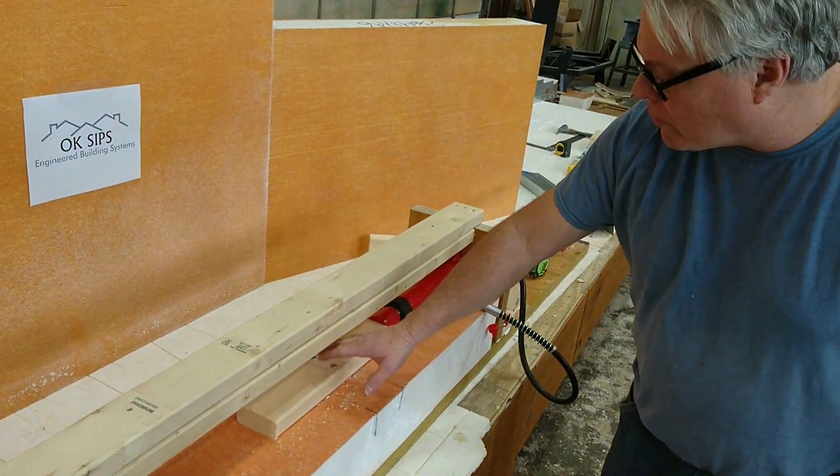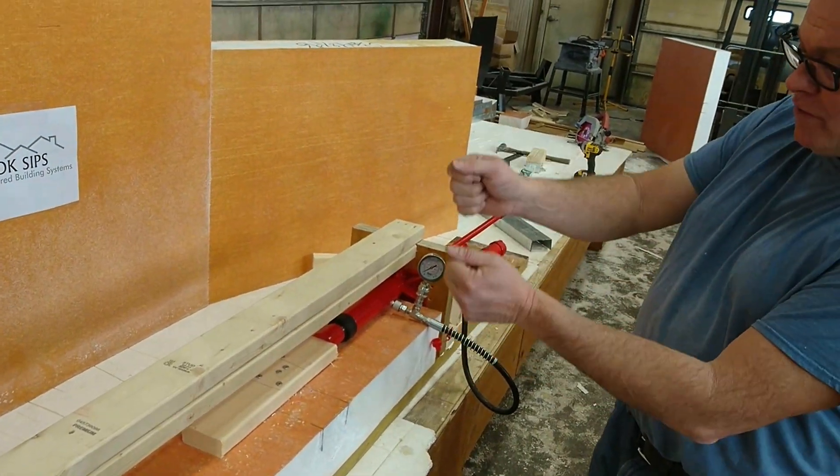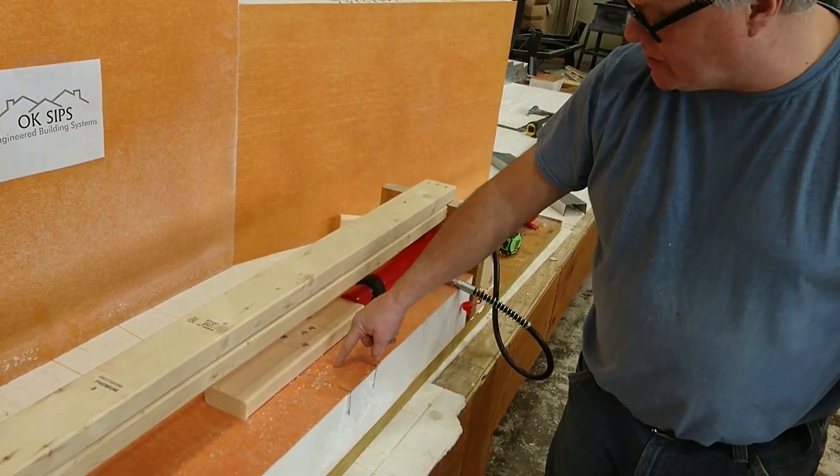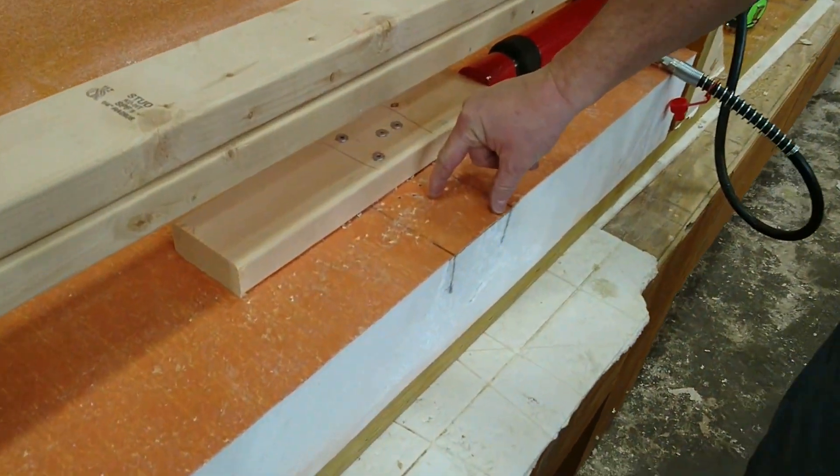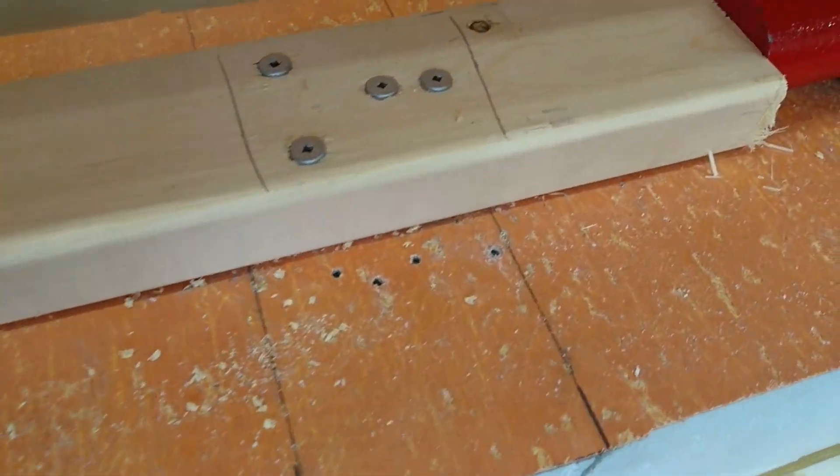After our last test with the 2x4, we wanted to see what happens if we put the 2x4 in the other direction so it can't really rock over like this one did. We don't have any glue in here. We just threw four screws in there mainly just to make sure they're sunk in good to the steel. And we just want to try to make our panel fail, not make the screws pull out.